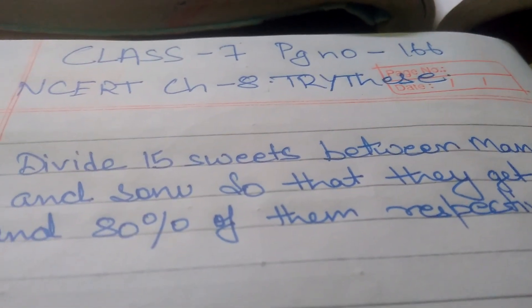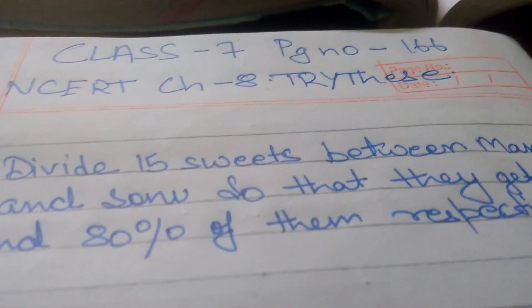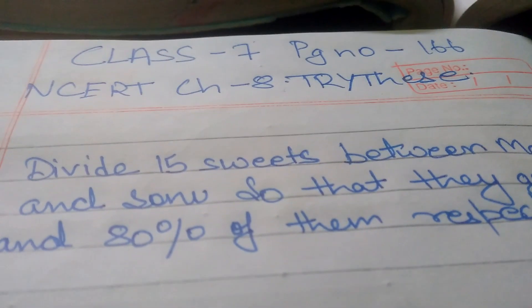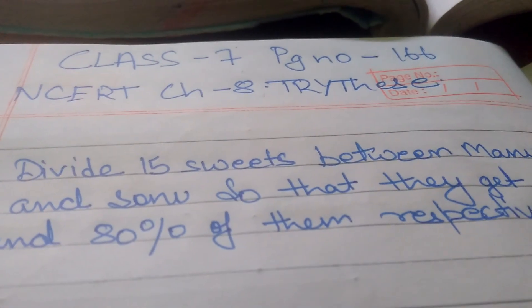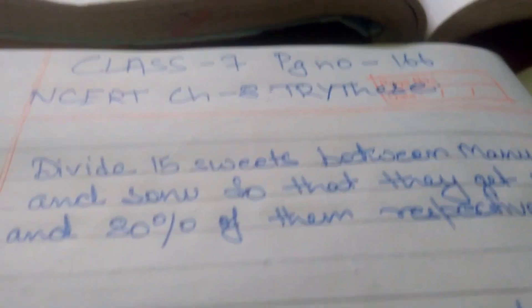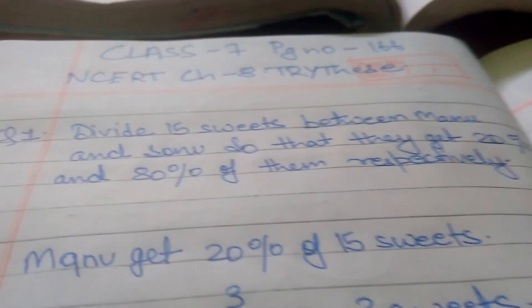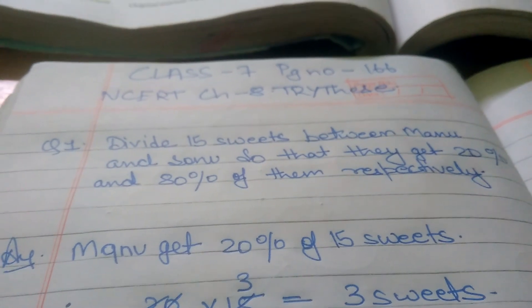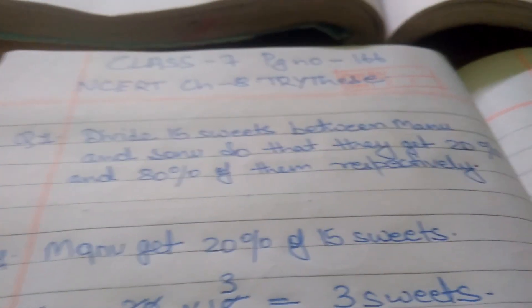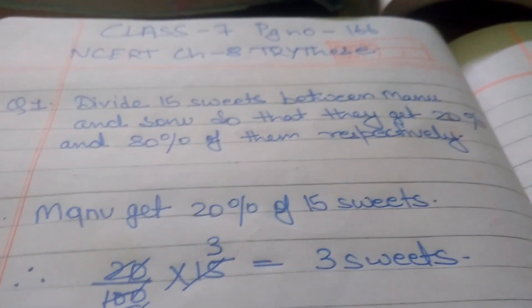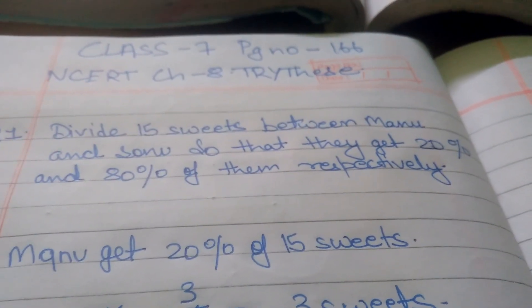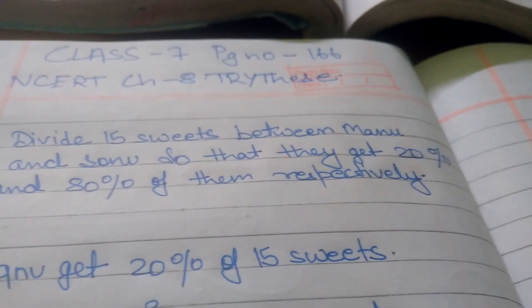Today we are going to solve the triads of chapter 8, class 7, page number 166. Hello friends, I'm Olive and I'm going to solve the two questions that are in triads. The video will be short. The first question is: divide 15 items between Manu and Sanu so that they get 20% and 80% of them respectively.